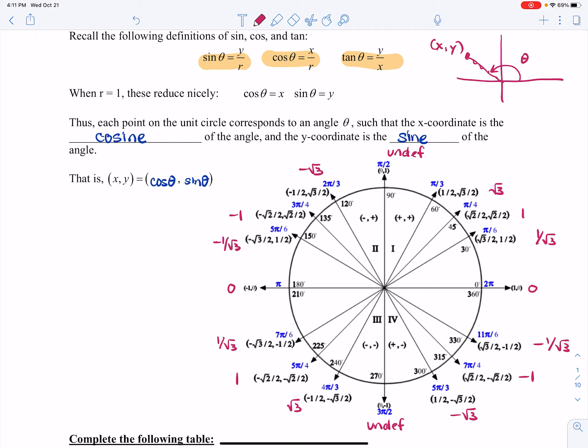And when r is 1, this stuff simplifies. For example, if r is 1, I just have y equals sine theta. And if r equals 1, I have x equals cosine theta. So there's your definitions there.